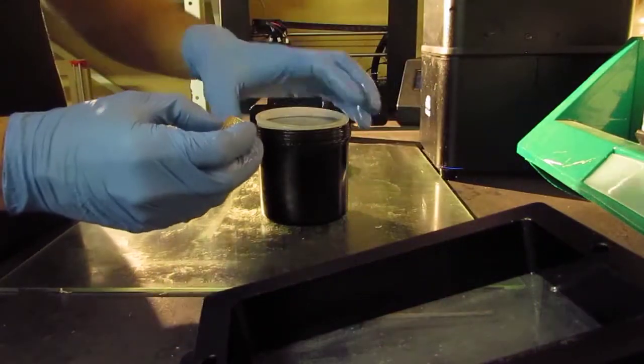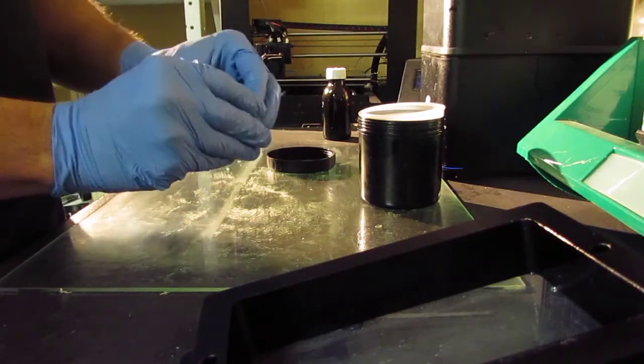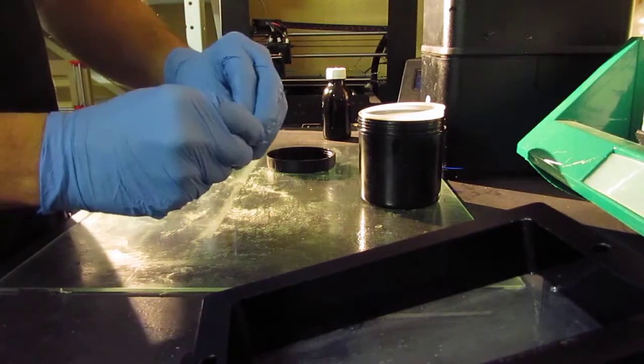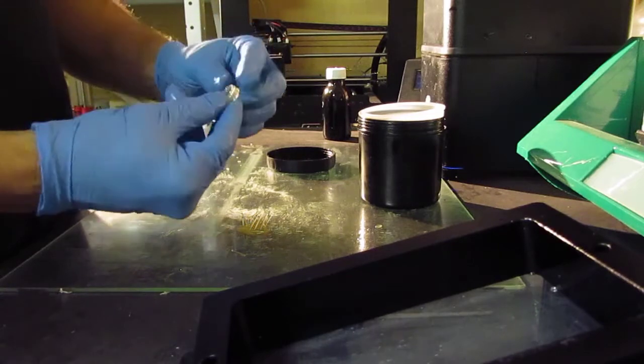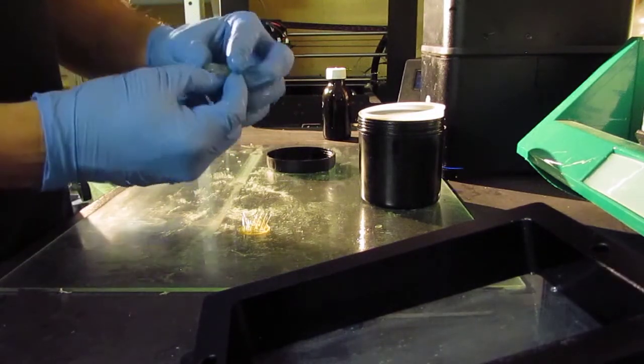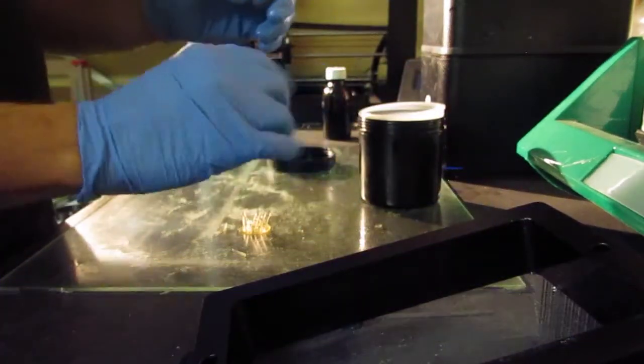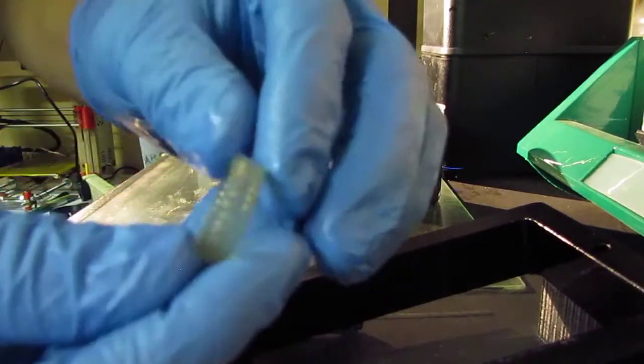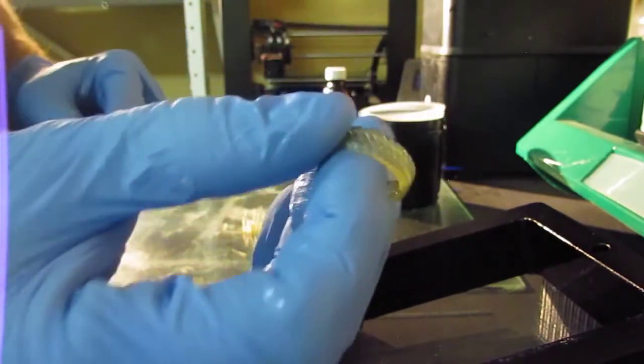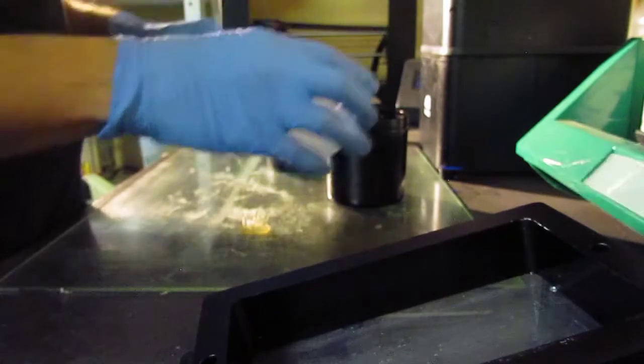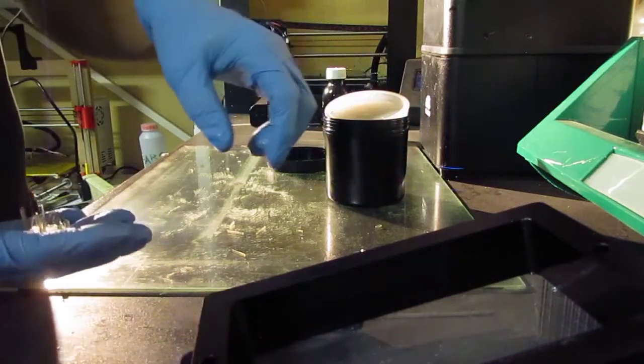All right, so that's pretty much it. Once it comes out of the IPA I'll break the supports off. Sometimes these come off easy, sometimes it can be tough, and undoubtedly that's still going to need some cleanup afterwards. But essentially that's that done. So sometimes I'll drop that back in there and just let it soak in there for a little bit longer while I clean up the print.